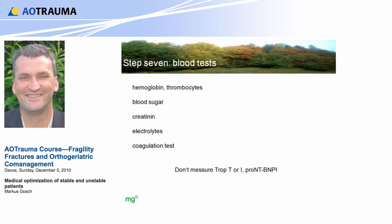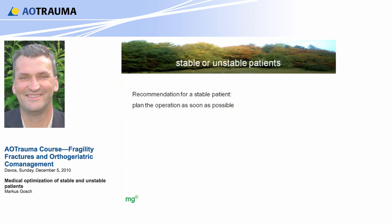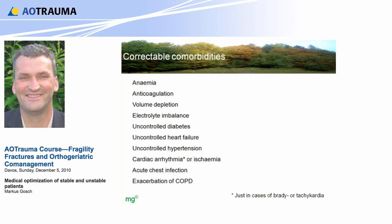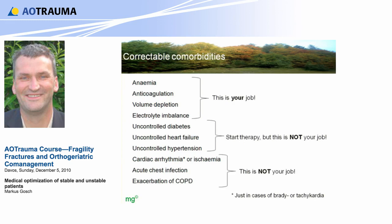For a stable patient, the recommendation is to plan the operation as soon as possible. For an unstable patient, initiate a meeting of the interdisciplinary team, set a goal for optimization, and identify and treat correctable comorbidities immediately. Correctable conditions include anemia, anticoagulation, volume depletion, electrolyte imbalance, uncontrolled diabetes, uncontrolled heart failure, uncontrolled hypertension, cardiac arrhythmia, acute chest infection, and exacerbation of COPD. The first four are your job as an orthopedic surgeon. For uncontrolled diabetes, heart failure, and hypertension, start the therapy but call a geriatrician or specialist for the more complex issues.